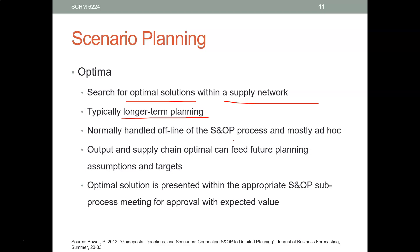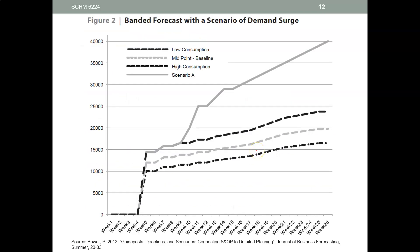Once you have your supply network, S&OP depends on it. Here's an example of forecasts and different scenarios. The middle line is the most likely scenario.